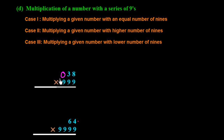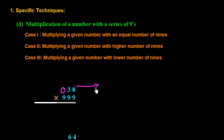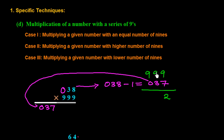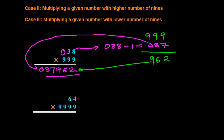We follow the same procedure as in Case 1. First we subtract 1: 038 minus 1 gives 037. Now we write 037 on the left side, and subtract it from 999. So 9 minus 7 is 2, 9 minus 3 is 6, 9 minus 0 is 9, giving 962 on the right side. The final answer is 37962.